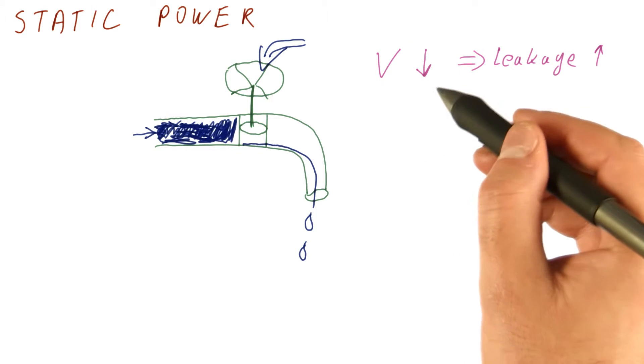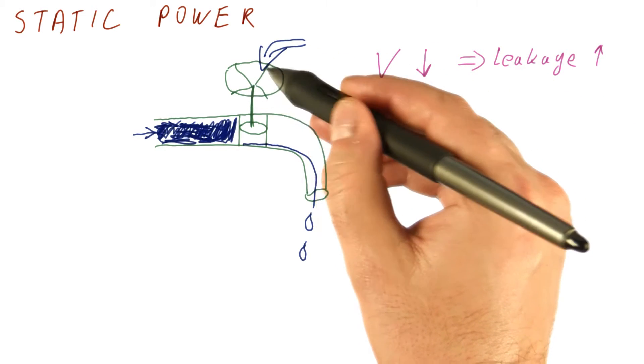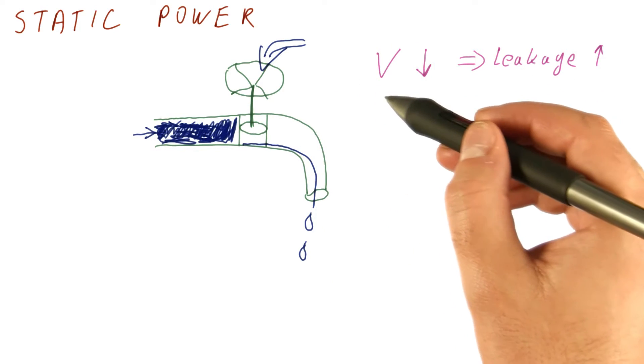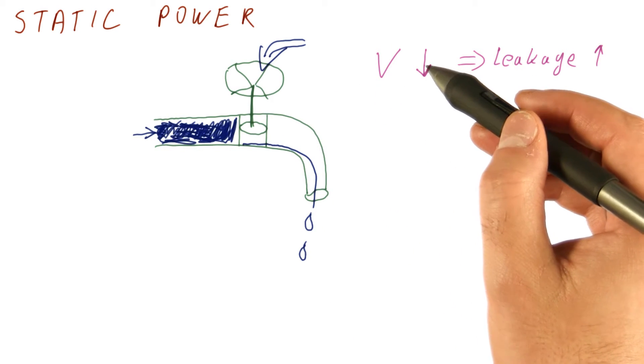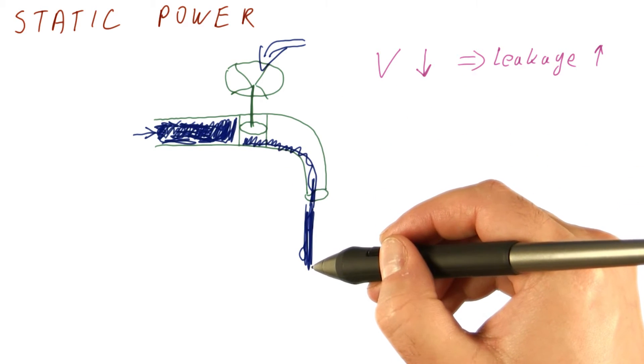If we have already lowered this voltage by a lot, then the pressure on this valve here is relatively wimpy already. If we still lower the voltage further, what's going to happen is we're going to get a much larger stream of leakage here.